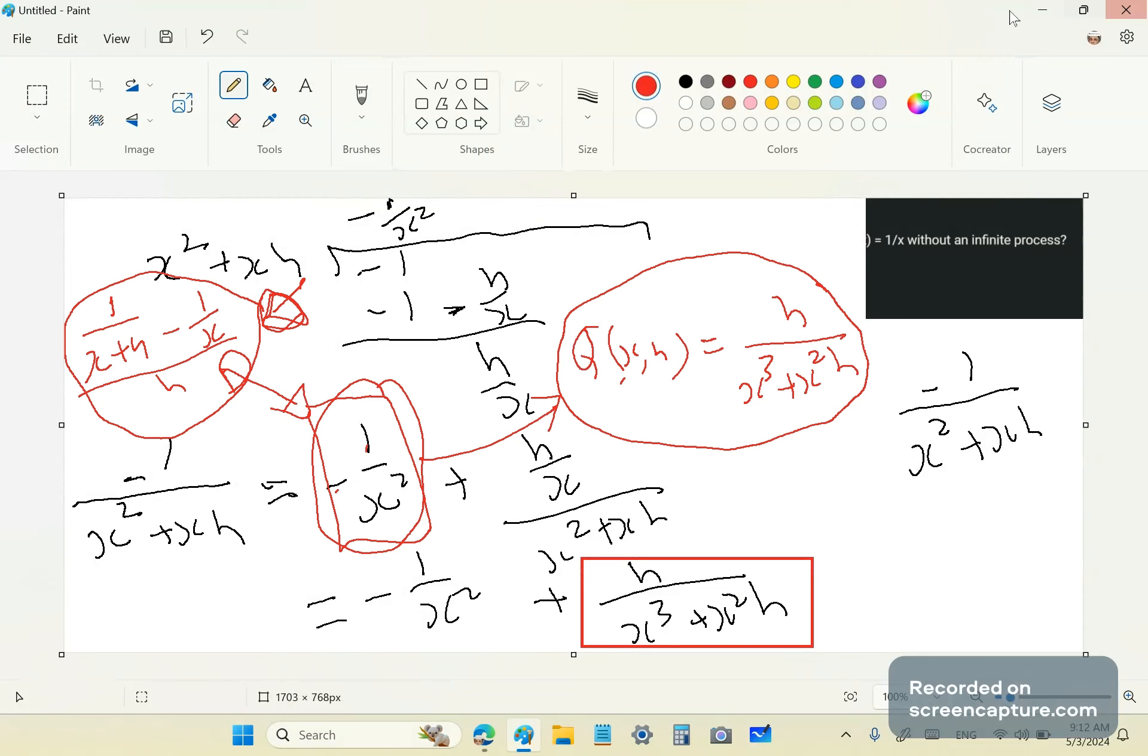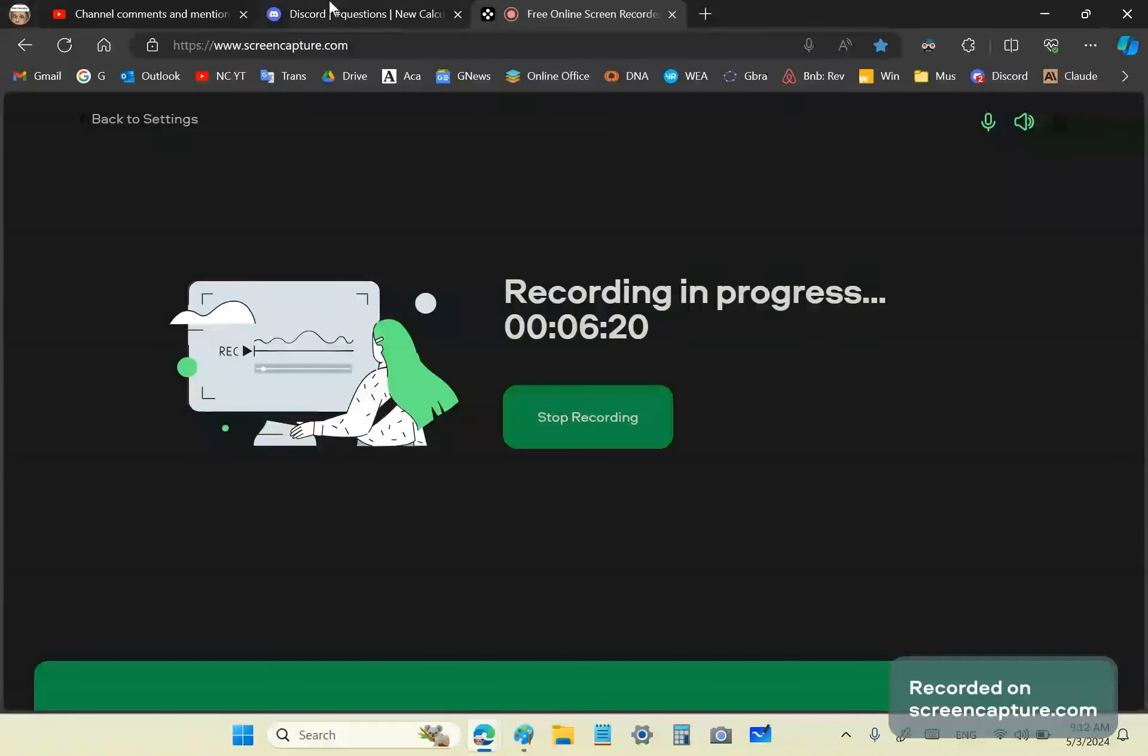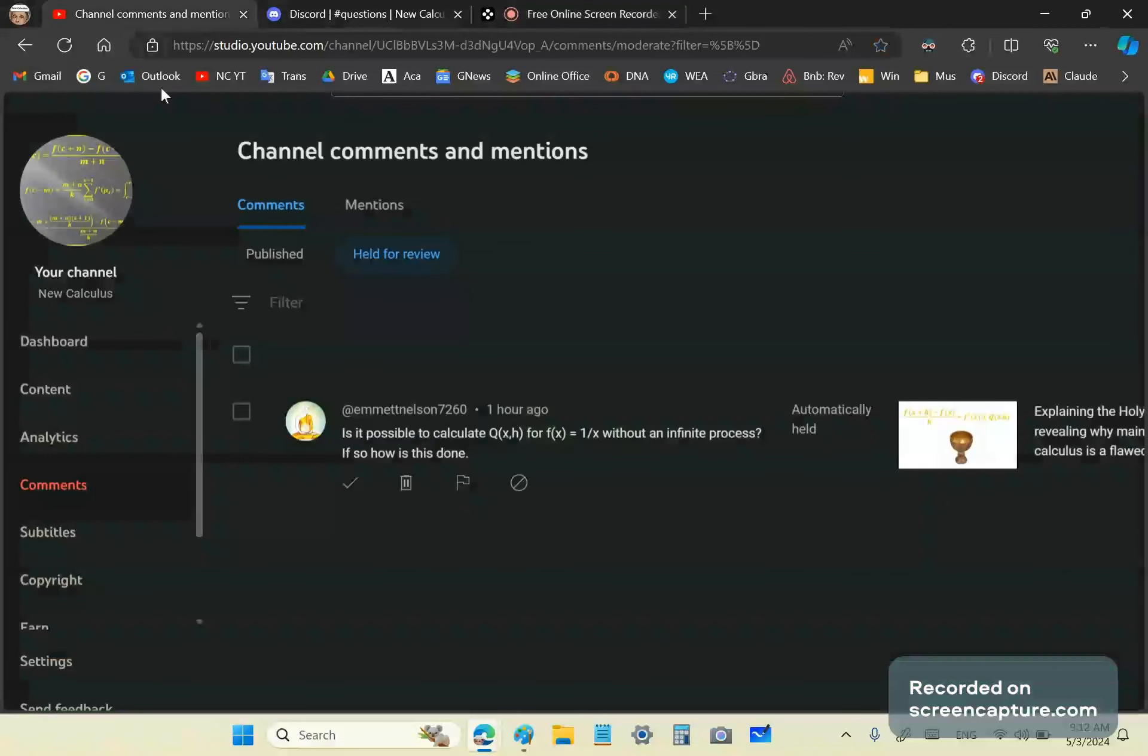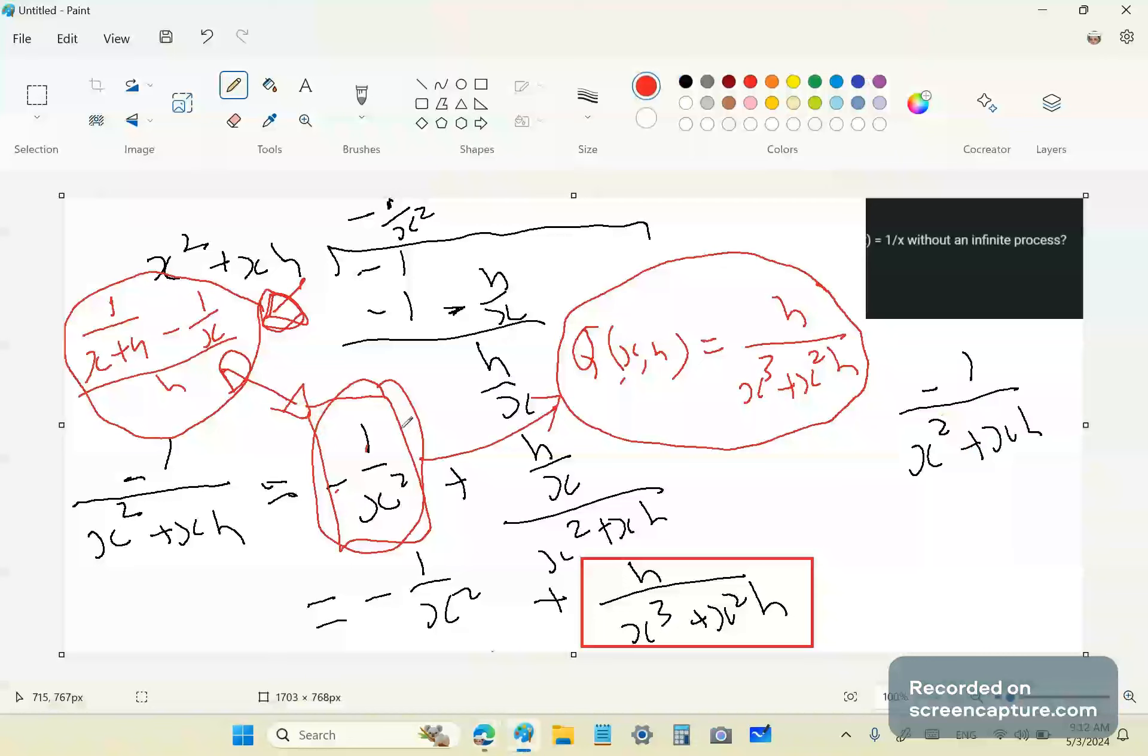So if we go back to the question here, it says is it possible to calculate q(x,h) for f(x) without an infinite process? Of course it is. You can calculate it for any particular function. And the trick is, if you find it difficult to calculate q(x,h), you can always... let me clear this again. You can always do this.